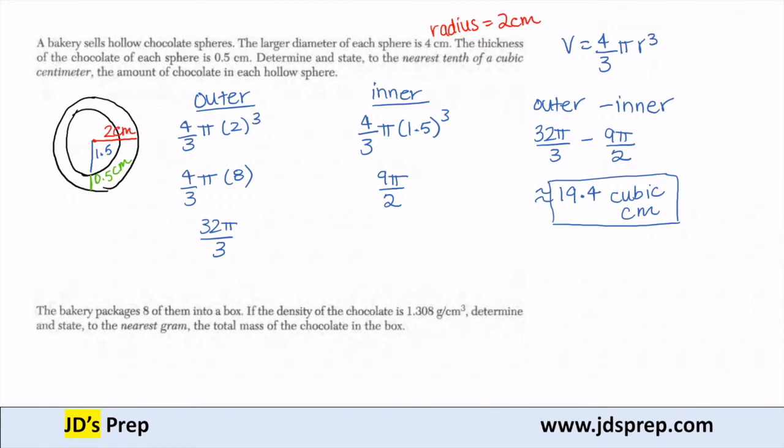So we do need a formula here. Mass is density times volume. We're given that each of the spheres has a density of 1.308 grams per cubic centimeter, and we just found on the first part the volume of each sphere to be 19.4 cubic centimeters of chocolate.